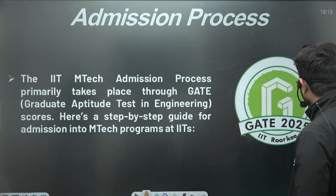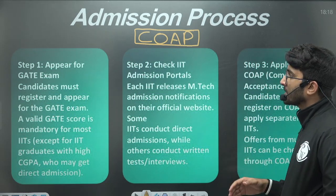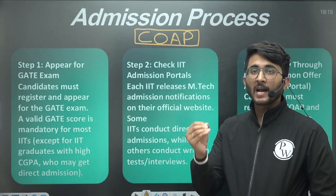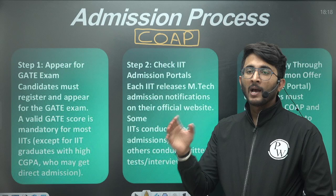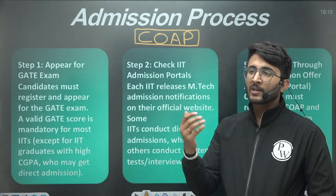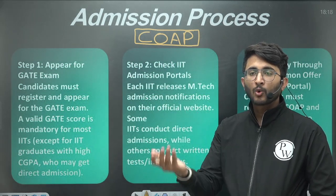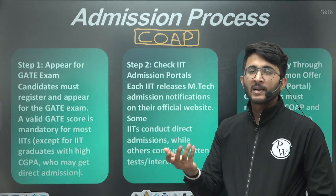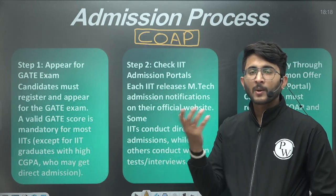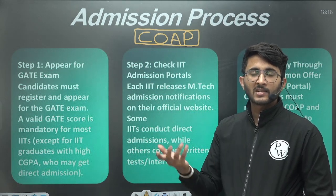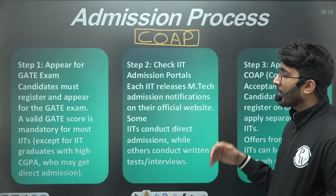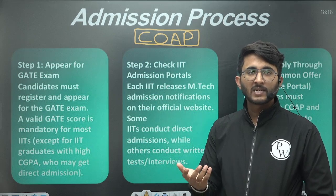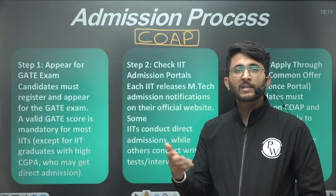If you talk about IIT admissions first, you need to understand the complete mechanism. The first step is to visit the individual IIT MTech admissions portal and choose your courses. For example, if you belong to mechanical engineering, the core courses are thermal, production, and design. There are also interdisciplinary courses like applied mechanics, energy studies, and others. Choose based on your interest, and also consider the cut-off, placements, and past records.